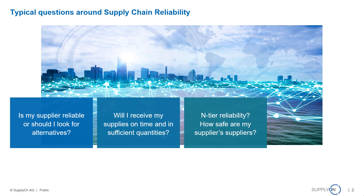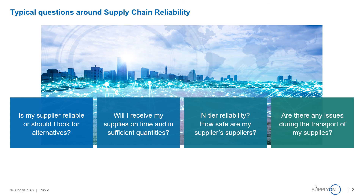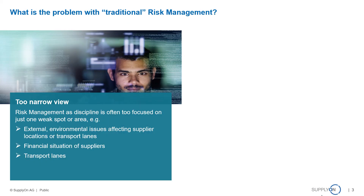Nowadays, further questions arise, such as what about N-tier reliability — how safe are actually my suppliers' suppliers? Other questions concern transport, especially in multimodal transport: are there any external events like weather or traffic situations that may affect my suppliers on the transport way?